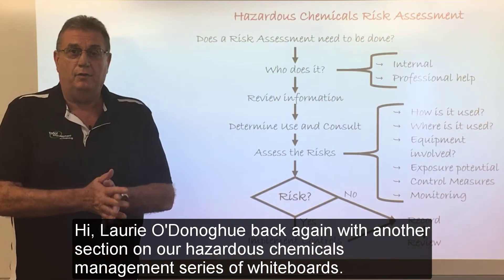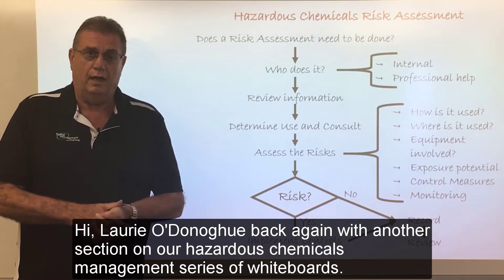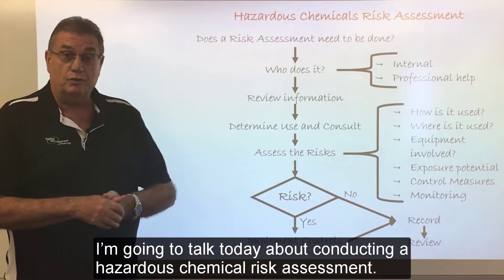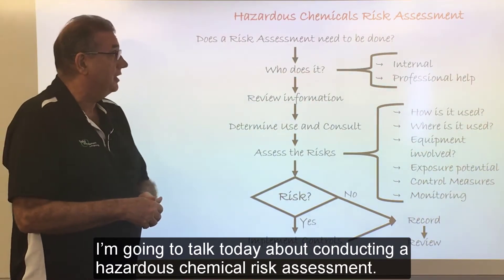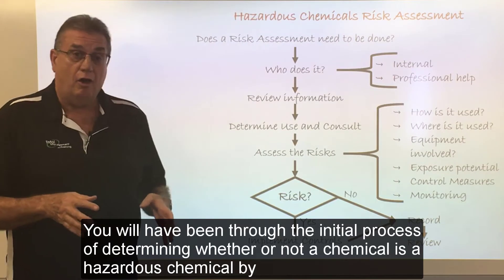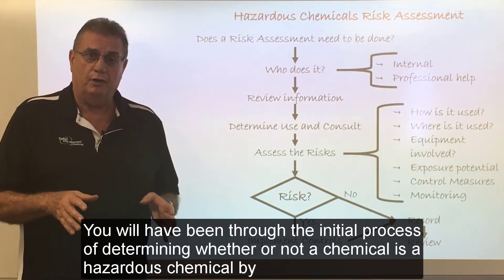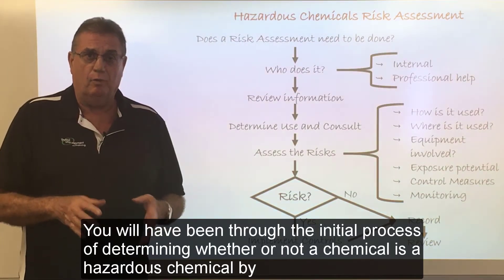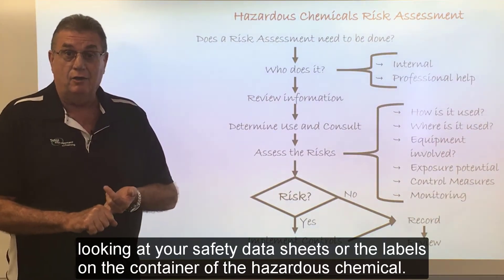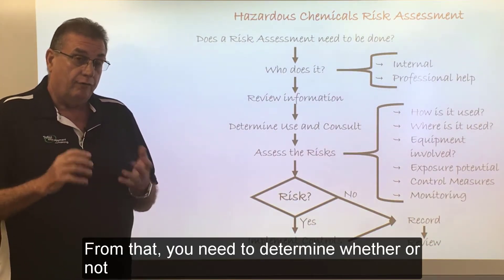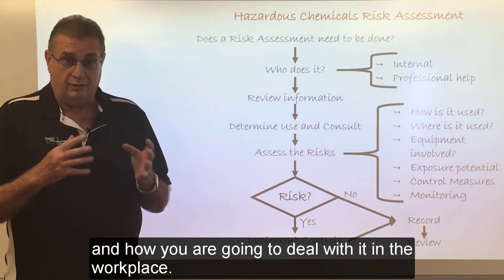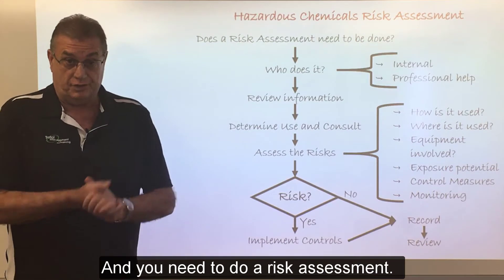Hi, Laurie O'Donoghue back again with another section on our hazardous chemicals management series of whiteboards. I'm going to talk today about conducting a hazardous chemicals risk assessment. You'll have been through the initial process of determining whether or not a chemical is a hazardous chemical by looking at your safety data sheets or the labels on the container. From that, you need to determine whether or not and how you're going to deal with it in the workplace, and you need to do a risk assessment.